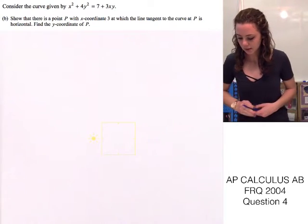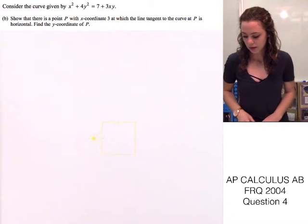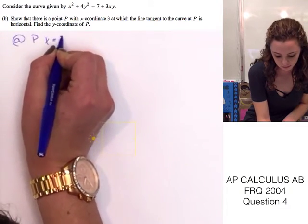Okay, on to part B. Part B says, show that there is a point P with x coordinate 3. So, let's write that down. At P, x equals 3.